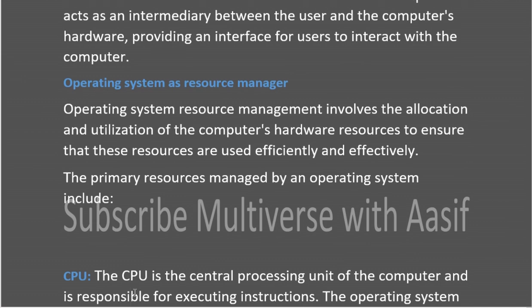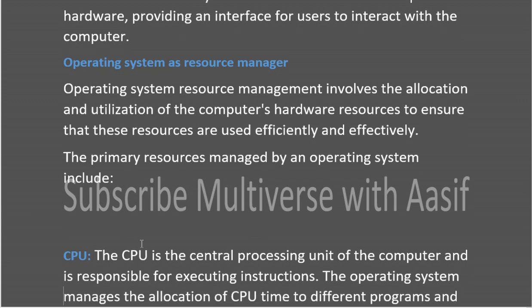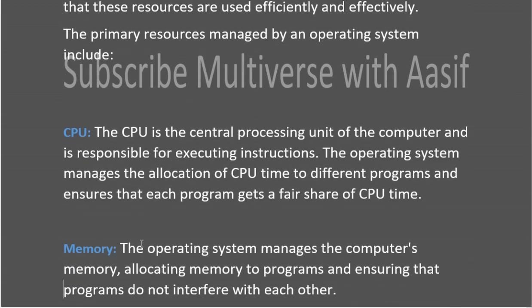Operating system resource management involves the allocation and utilization of computer hardware resources to ensure that these resources are used efficiently and effectively. The primary resources managed by the operating system are: CPU, memory, I/O devices, and various other resources.